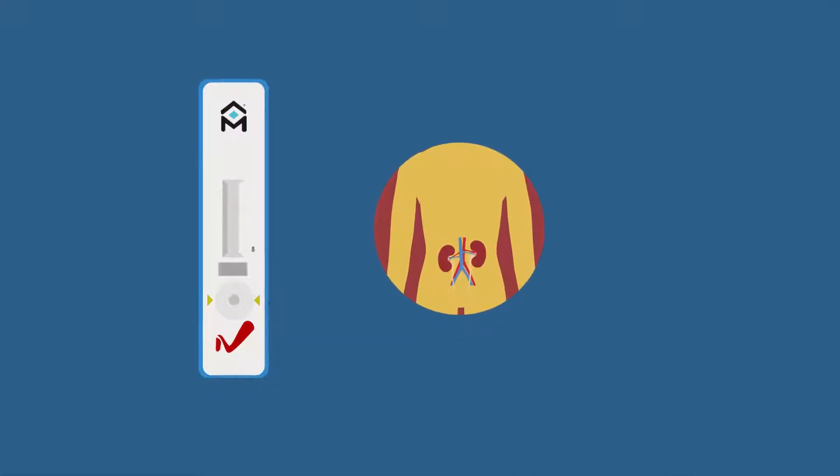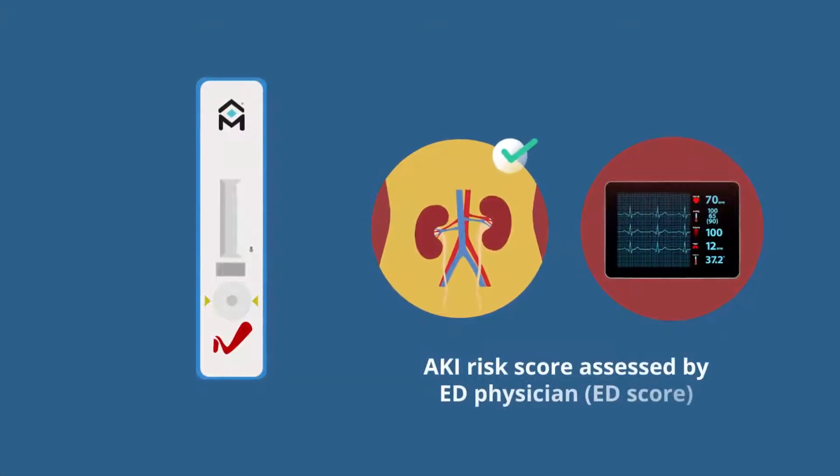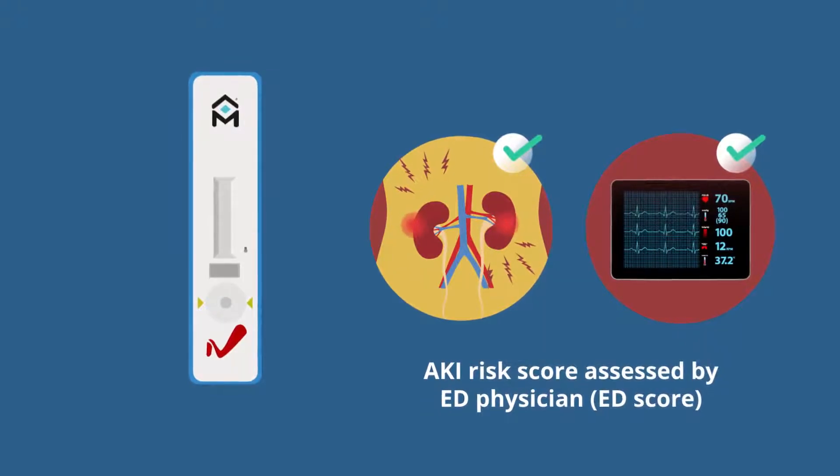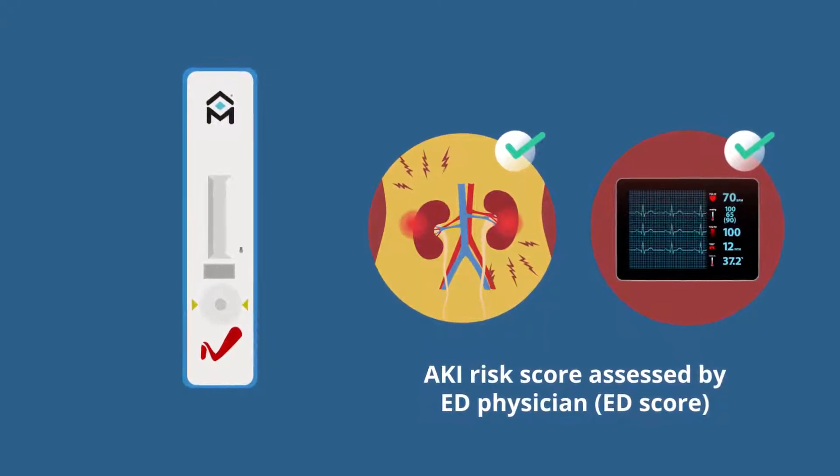Further, the same NefroCheck value predicted AKI development better than patient ED score, and it successfully predicted 30-day mortality.